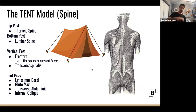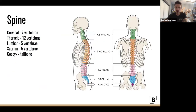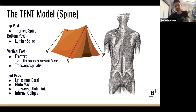I use what's called the 'tent model' of the spine. Imagine an old-style tent — the entire top piece is your spine. The top post is the thoracic spine and the bottom post is the lumbar spine. The tent runs along creating that natural curvature. From a training standpoint, we look at the different posts holding the spine in place, using the musculature coming from all angles to stabilize it.